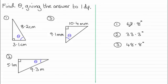Number one then is 67.8 degrees, two is 33.3 degrees, and three is 48.8 degrees. Remember they're all given to one decimal place.